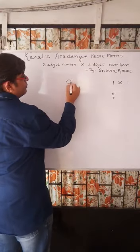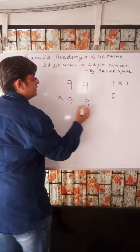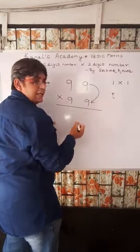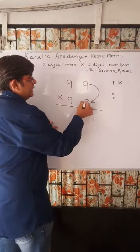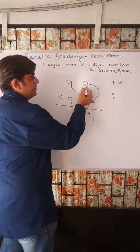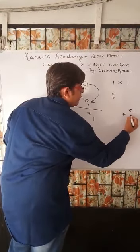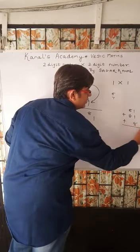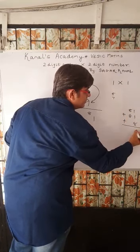One more sum. That will be the ending. Now, suppose we take 99 multiplied by 99. First step. 9 into 9, 81. 9 times 9 is 81. 9 times 9 is 81. So, you have to add this 8 here.